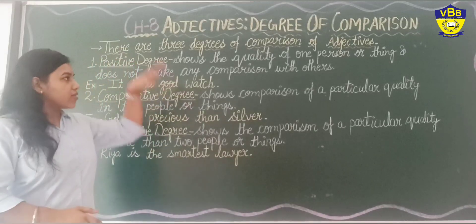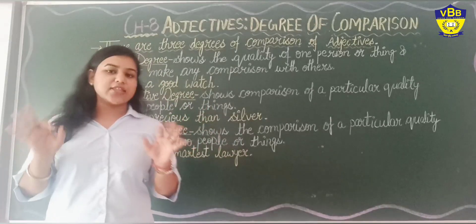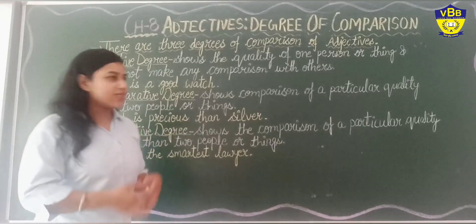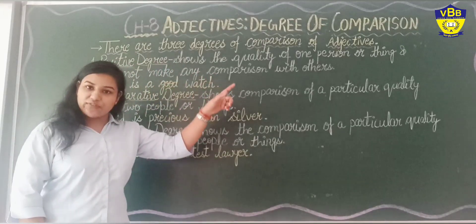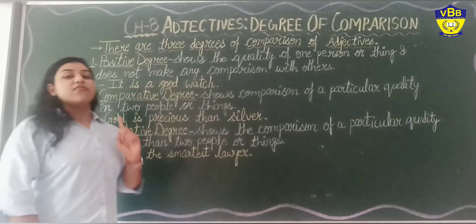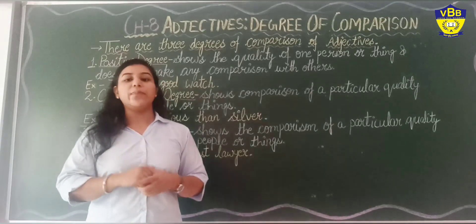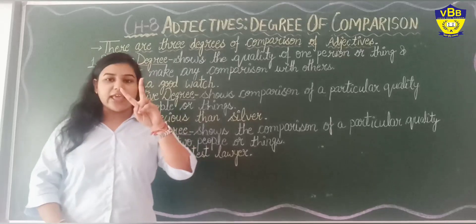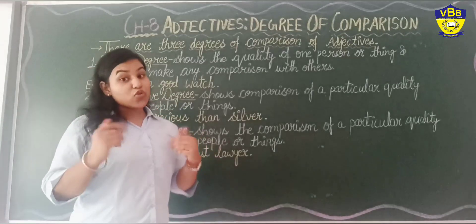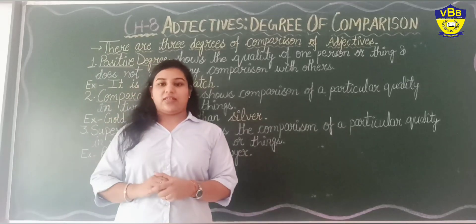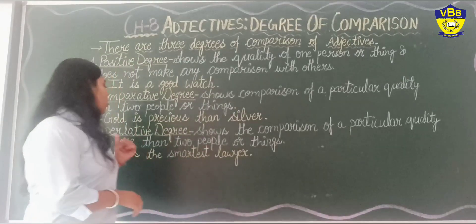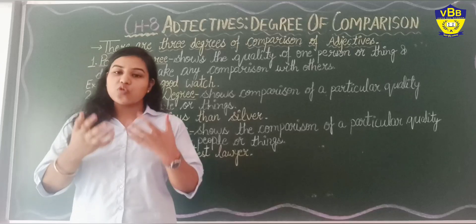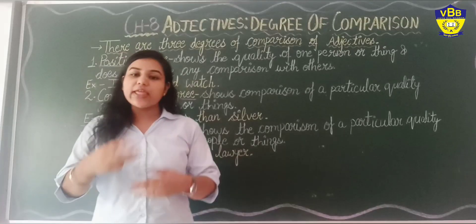I think it is now understood by you all what are the three degrees of adjectives for comparison. Let's recall the topic again. First, Positive Degree, used to show a quality of a particular person or thing without making any comparison. Second, Comparative Degree, used to show comparison between two things. Third, Superlative Degree, used to show comparison between more than two things.